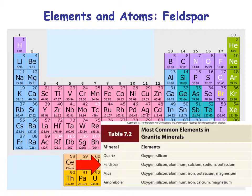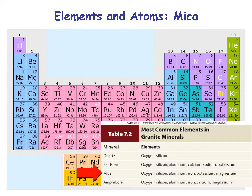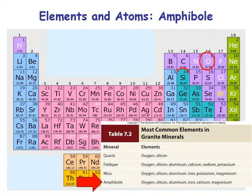Looking at the table of elements for feldspar: feldspar includes oxygen, silicon, aluminum, calcium, sodium, and potassium. Mica contains oxygen, silicon, aluminum, iron, and potassium. And then amphibole contains oxygen, silicon, aluminum, iron, calcium, and magnesium.